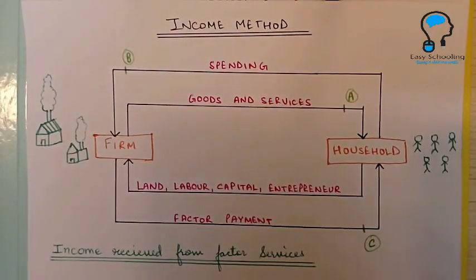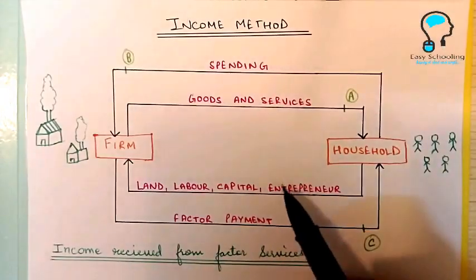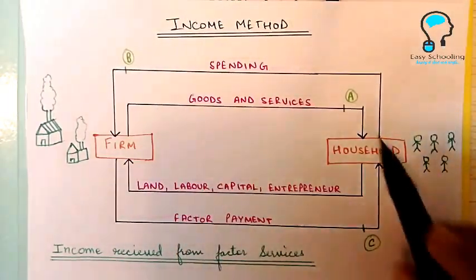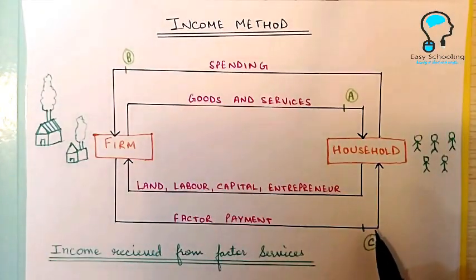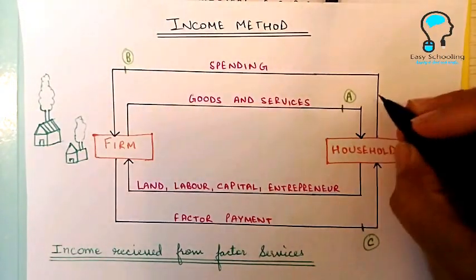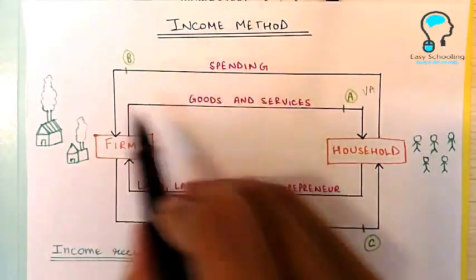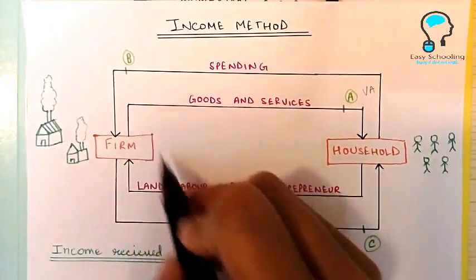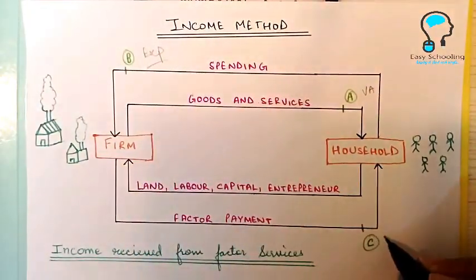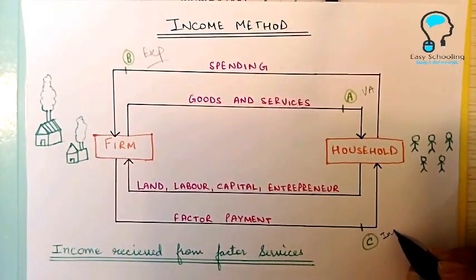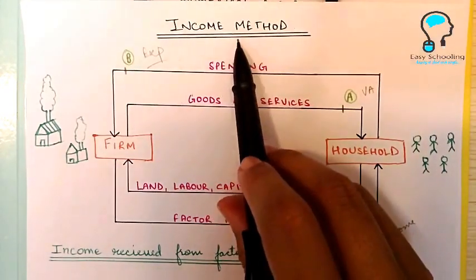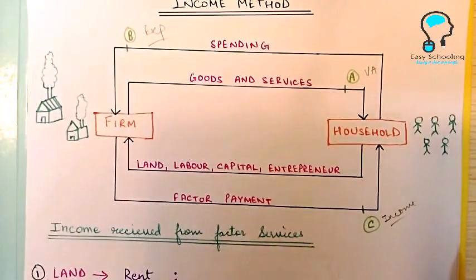In the first video on national income, we learned that we can calculate GDP at any of three points A, B, and C, and the GDP will be the same at all points. If you calculate at point A, that is the value added method; if you calculate all spending in an economy, that is the expenditure method; and if you calculate all income, that is the income method. In this video, we are going to calculate GDP by the income method.